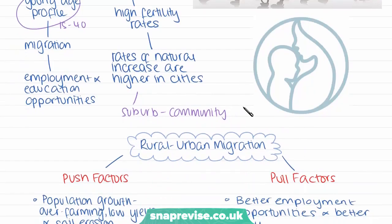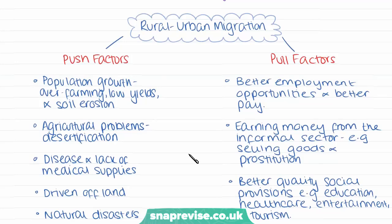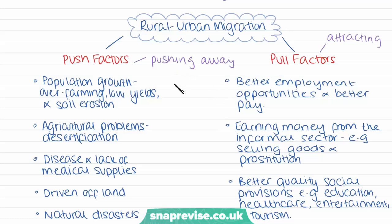Now we're going to look at urban and rural migration, examining some of the push and pull factors. The reasons for rural-urban migration are often divided into push and pull factors. Push factors are those which cause people to move away from rural areas, while pull factors are those attracting them to urban areas. Typically in low-income countries, push factors tend to be more important than pull factors.